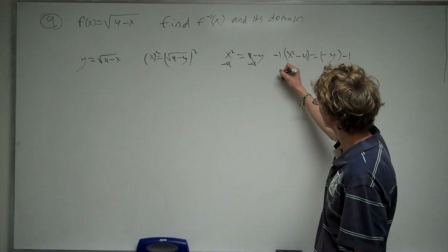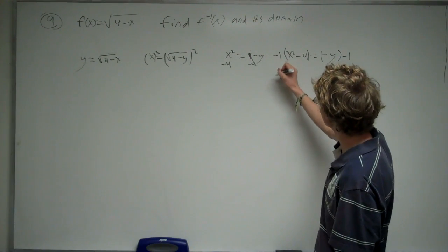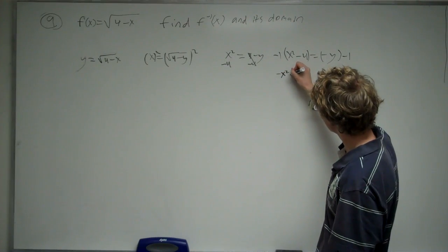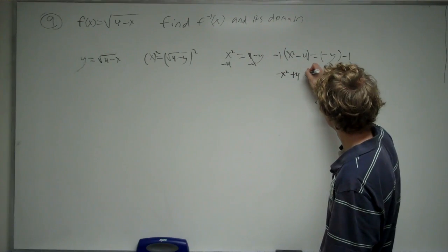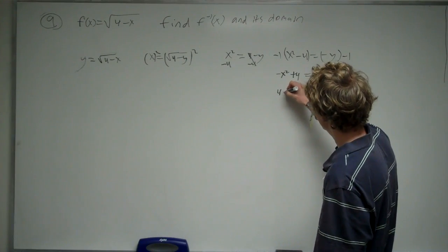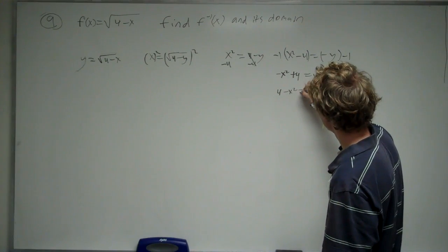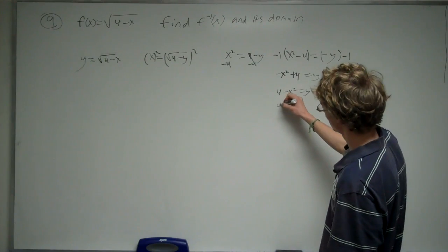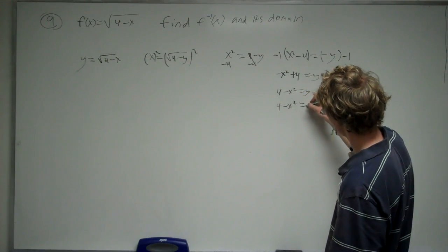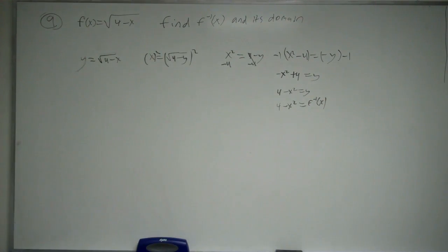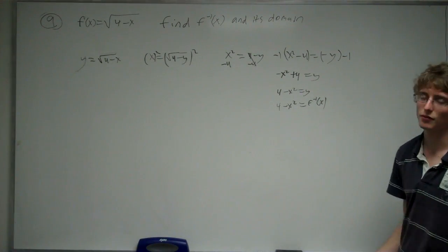And so our final answer for the inverse is going to be negative x squared plus 4 equals y, which is the same thing as 4 minus x squared equals y. And this y is the inverse, so we can convert that back into f of x notation. Alright, so this is the inverse.